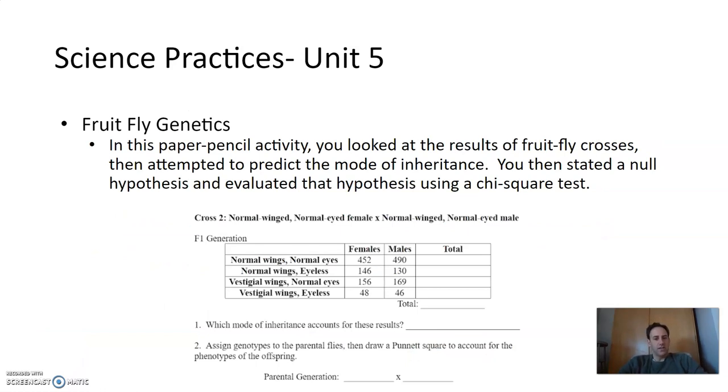Unit 5, we did this kind of paper-pencil activity to sort of analyze the results of crosses and figure out what mode of inheritance is it. Is it a monohybrid, a dihybrid, sex-linked, what's going on there? And then chi-square was a big part of this. That's where we introduced the chi-square test.